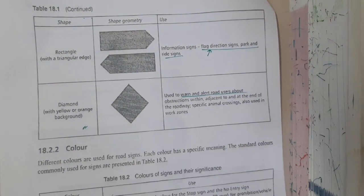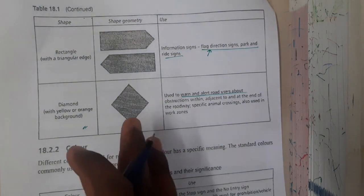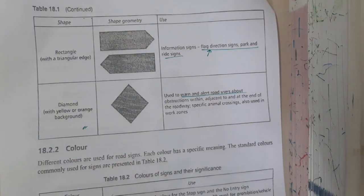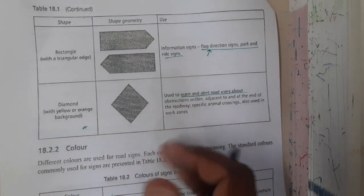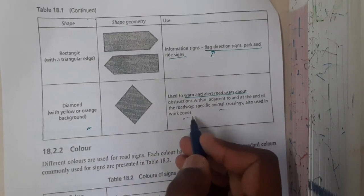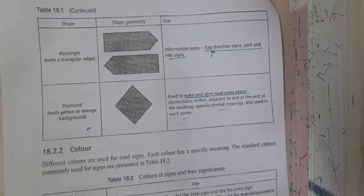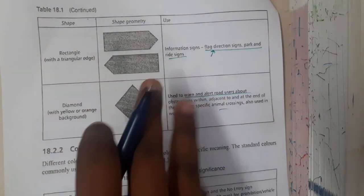Similarly, we see the diamond signs. Diamond signs are for warning or alerts. Any kind of animal crossings or any kind of work zones, school zones, all those things will be showing on this. So now I hope everyone got some basic idea about the shapes.